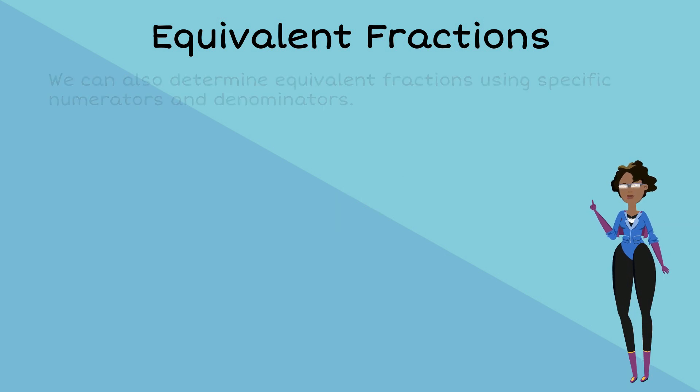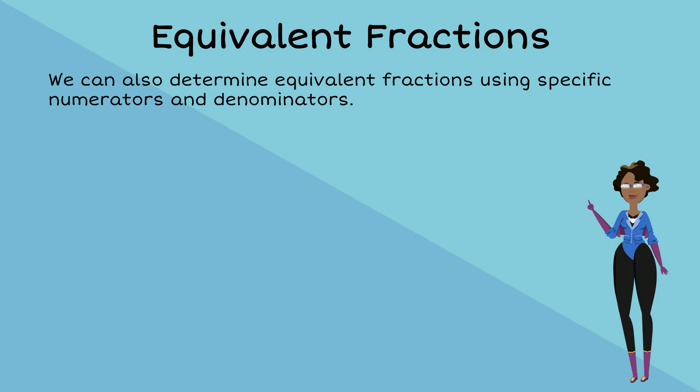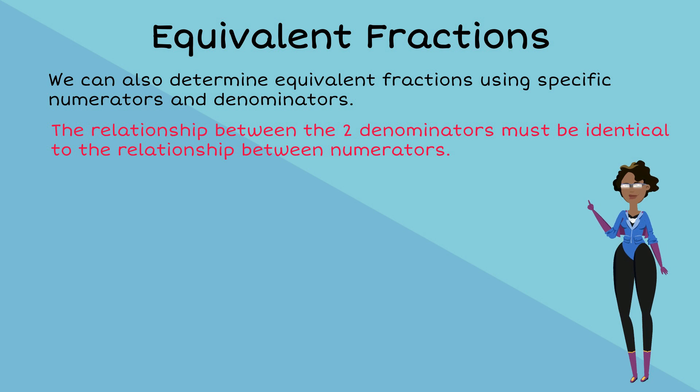We can also determine equivalent fractions using specific numerators and denominators. We know that for fractions to be equivalent, we must multiply the numerator and denominator by the same value. Therefore, the relationship between the two denominators must be identical to the relationship between the numerators.